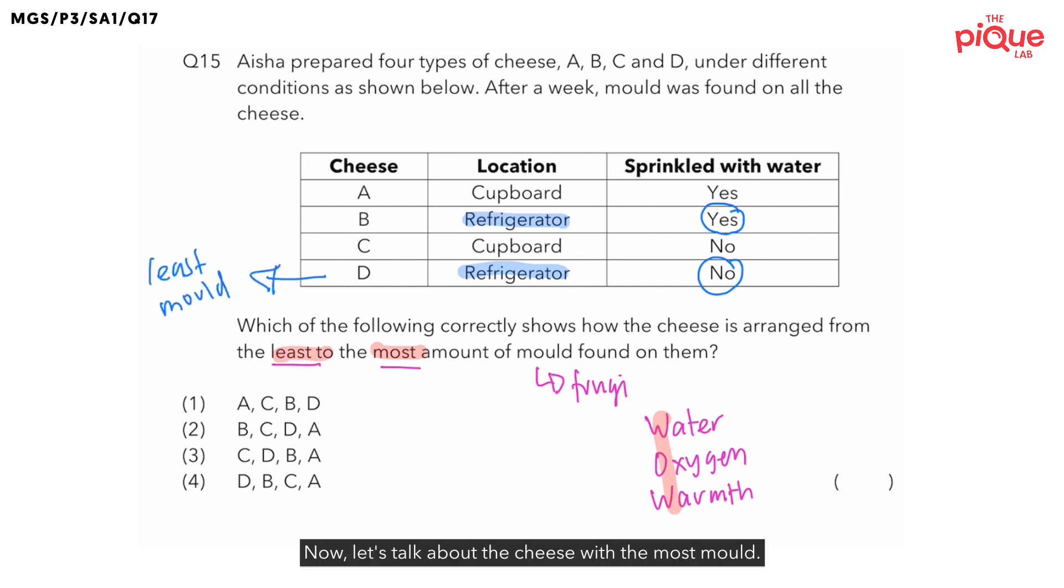Now, let's talk about the cheese with the most mold. So if I want the cheese to have the most mold, the cheese should be stored in the cupboard. So you have two options over here, A and C.